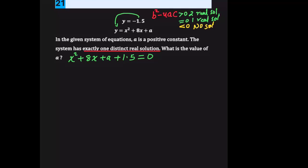So in this case, the system has exactly one distinct real solution. So that means b squared minus 4ac equals 0. We're going to use this expression to find the value of a.